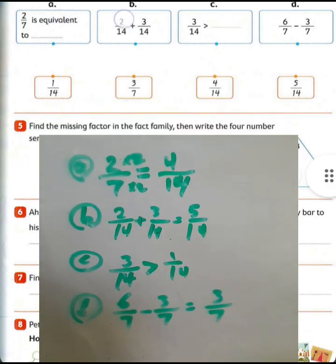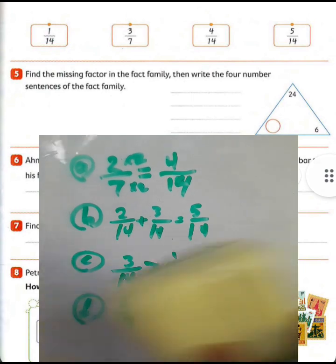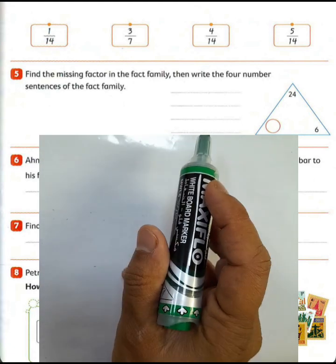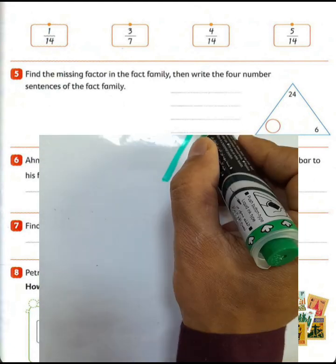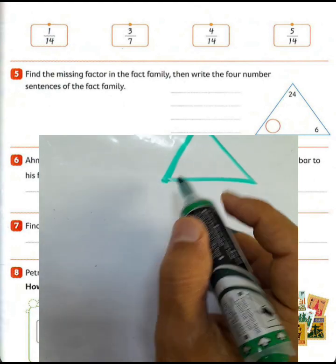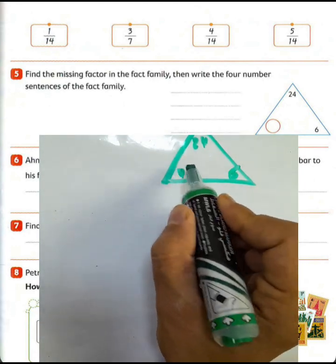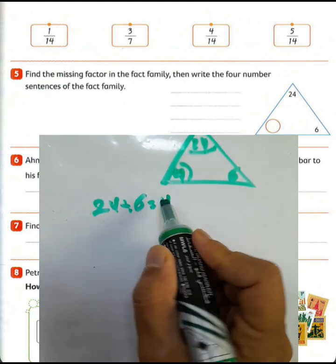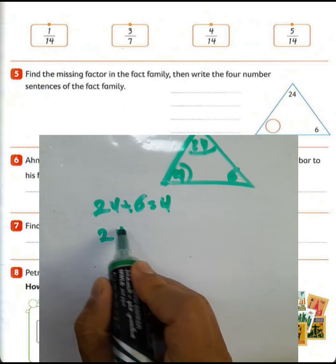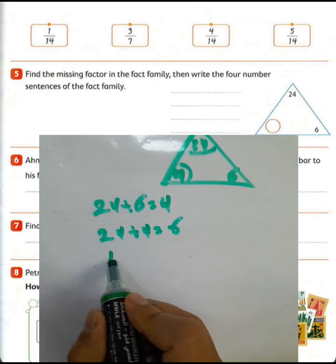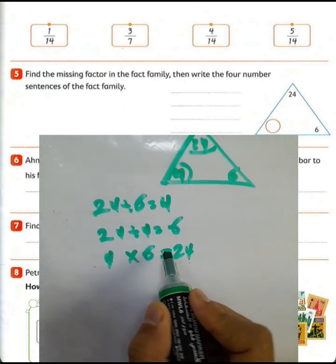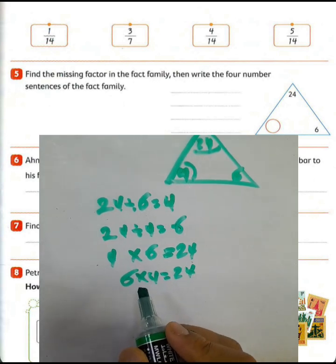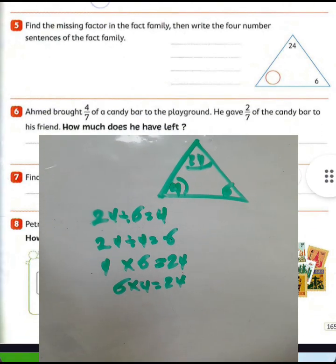Letter D: 6 over 7 subtract 3 over 7 — write denominator 7 and 6 minus 3 equals 3, so the result is 3 over 7. Question number 5: find the missing factor in the fact family. We have 24 and 6: 6 times 4 equals 24, so write 4 here. Then: 24 divided by 6 equals 4, 24 divided by 4 equals 6, 4 times 6 equals 24, and 6 times 4 equals 24.